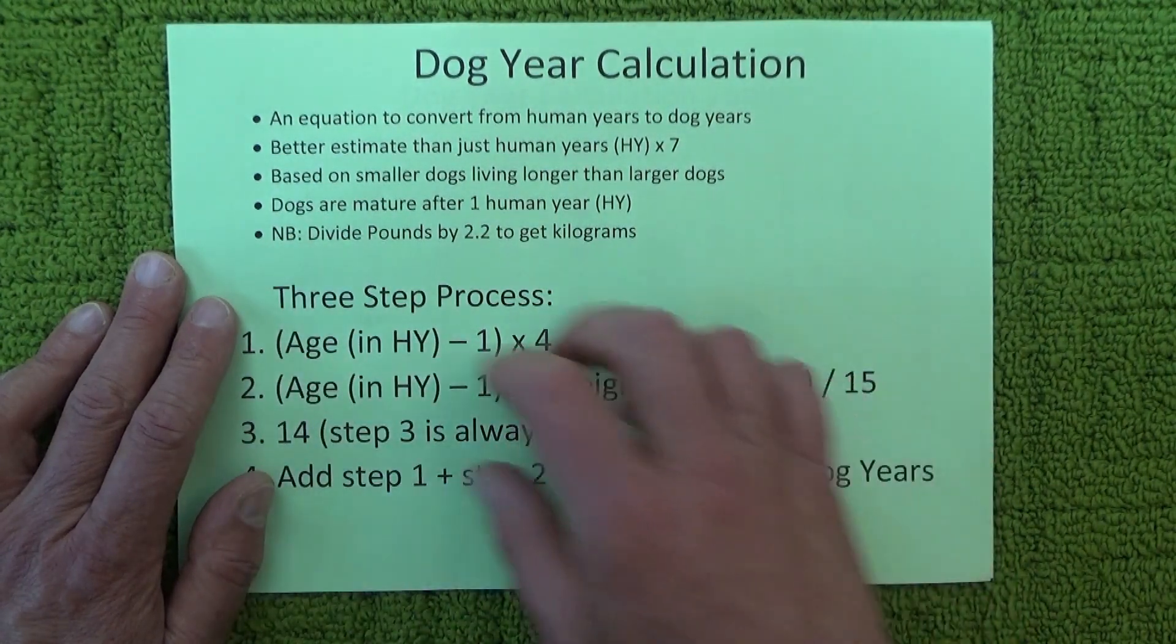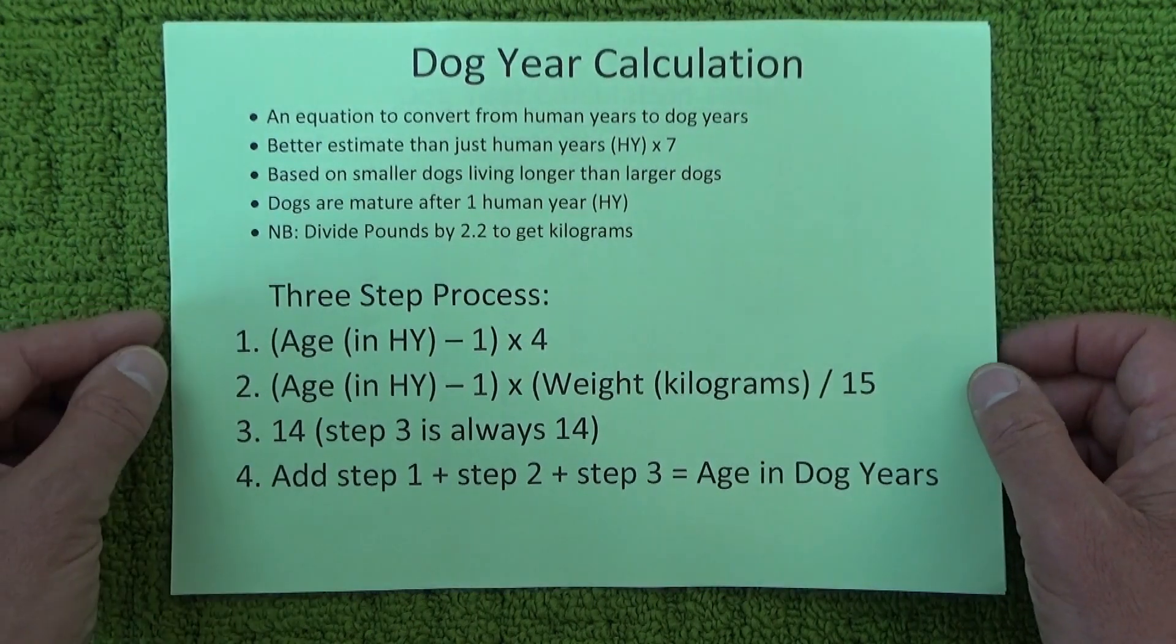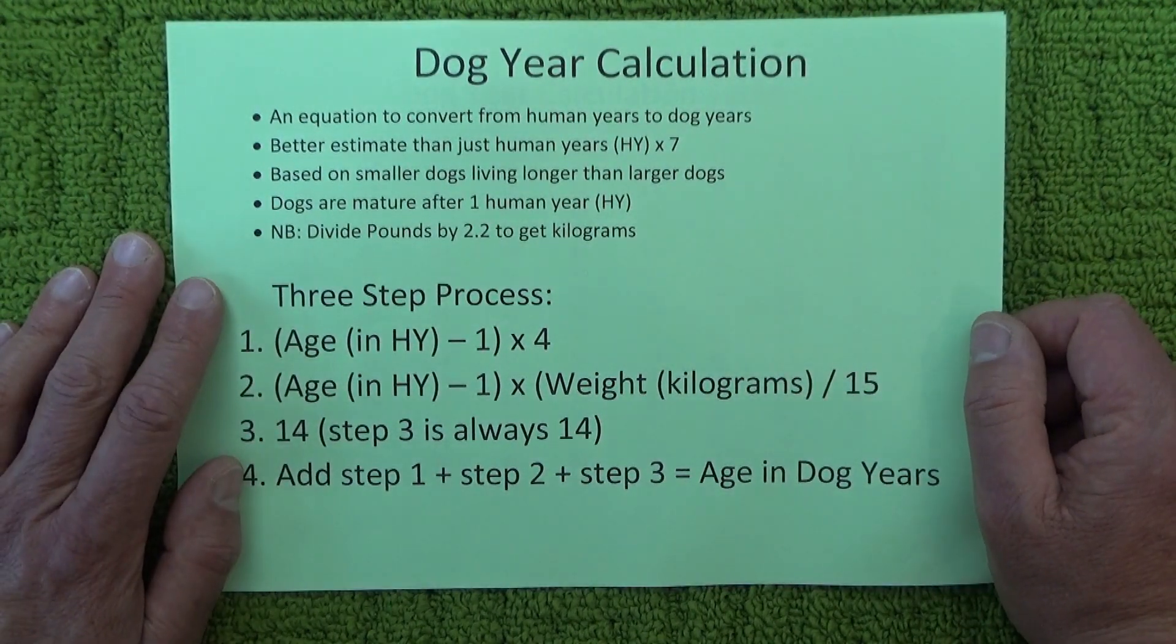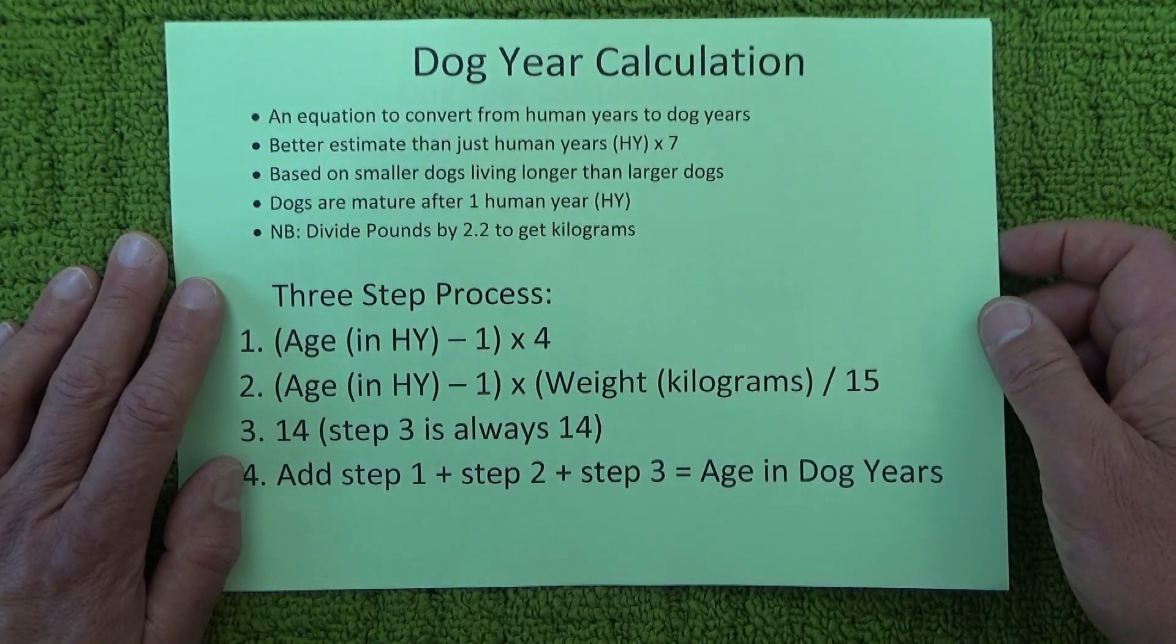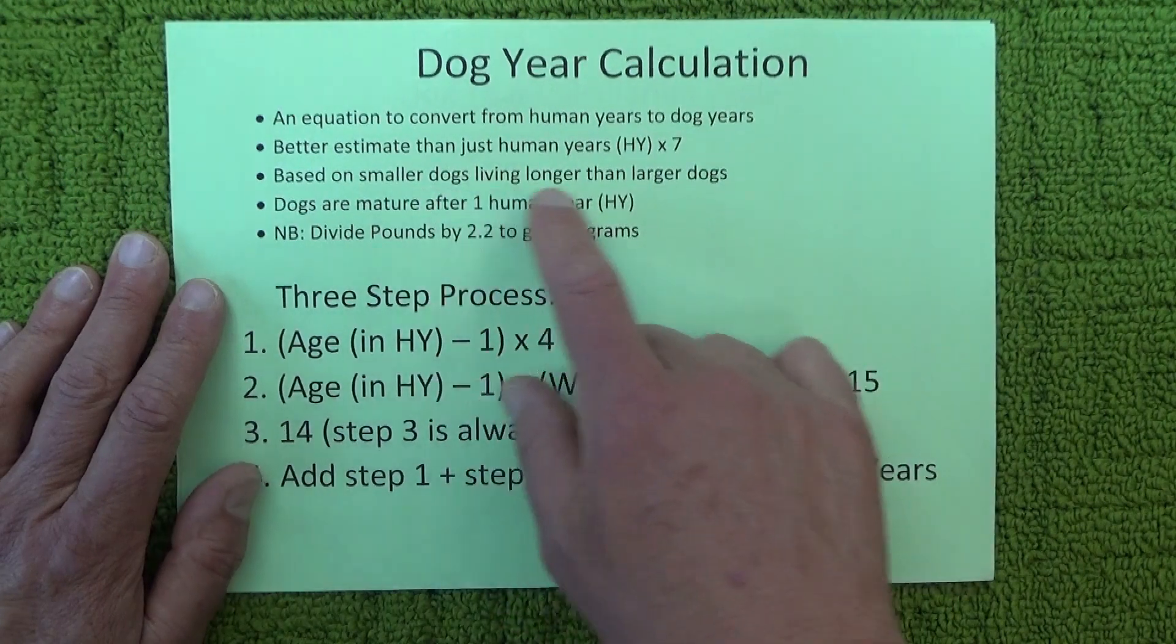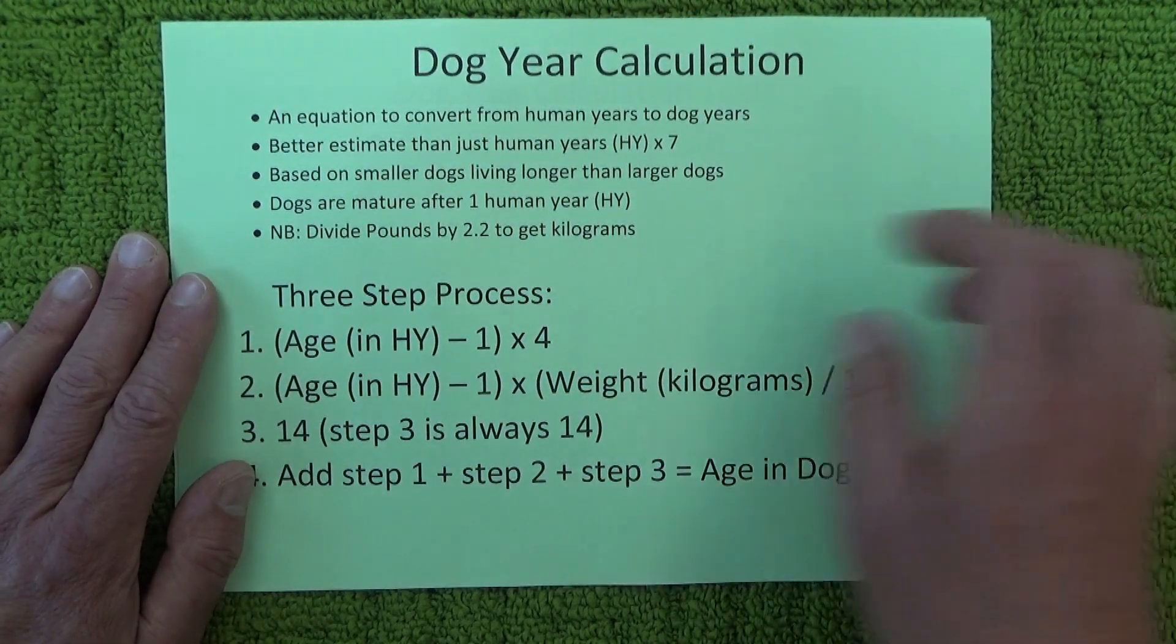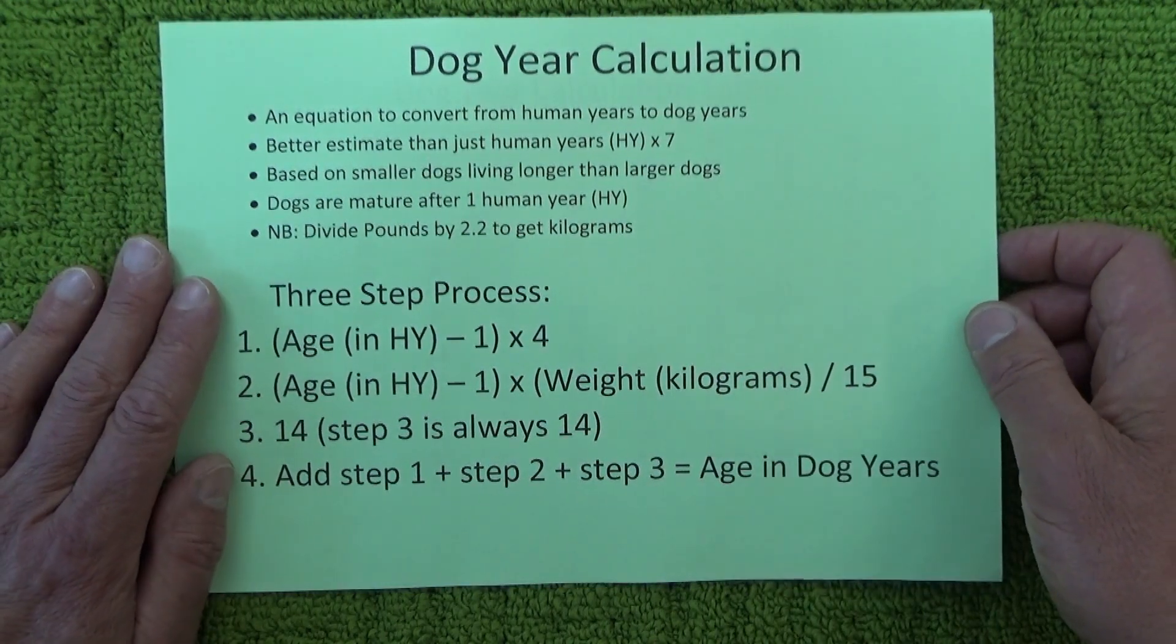This is based on the fact that smaller dogs live longer than larger dogs. For example, a chihuahua, which is quite a small dog, might live on average for 15 to 20 years, but a larger dog such as a great dane, which could weigh up to 60 kilos, may only live for 8 to 10 years.